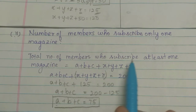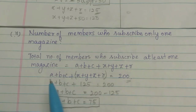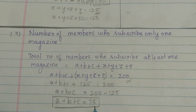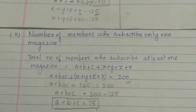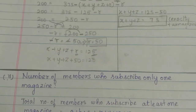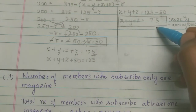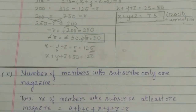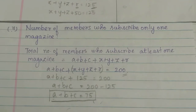Therefore, the number of members who subscribe only one magazine is 75 members. So exactly 2 magazines is also 75 members. That's all. Thank you.